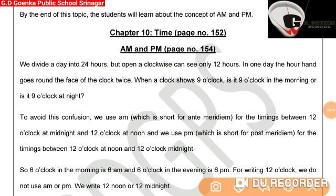Dear Goinkans, we divide a day into 24 hours. But open a clock and see that there are only 12 hours on the clock. In one day, the hour hand goes round the face of the clock twice. When a clock shows 9 o'clock, is it 9 o'clock in the morning or 9 o'clock in the night?